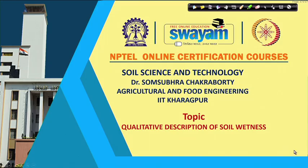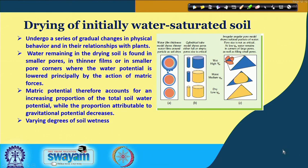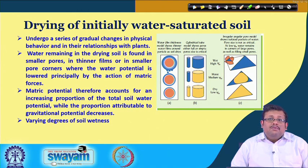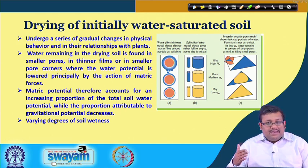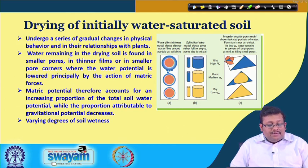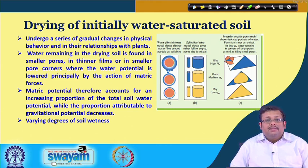Today we start a new topic: the qualitative description of soil wetness. Consider a totally saturated soil that you want to dry through the application of different metric potential or suction. As a result it will undergo a series of gradual changes in physical behavior and in its relationship with the plant. Water remaining in the drying soil is found in small pores, thinner films, or smaller pore corners where the water potential is lowered principally by the action of capillary forces.